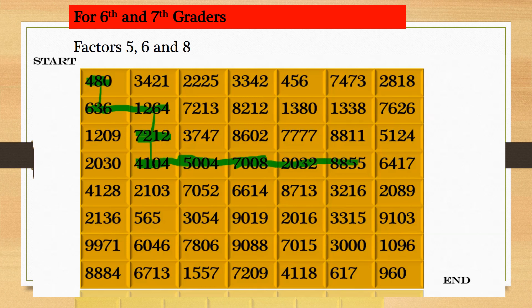Then 8,855, multiple of 5. Then 3216. Then 3315, multiple of 5. Then 3000, multiple of 8. Then 1096, multiple of 8. Then the endpoint, 960.